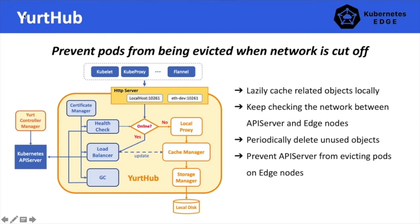The first problem we try to solve is how can we prevent pods from being evicted when the network connection between an edge node and an API server has been cut off. In the edge computing environment, the network connection between edge nodes and the API server can be unstable. However, Kubernetes requires the API server to be tightly connected to worker nodes. If a worker node is disconnected from the API server, or the API server misses several heartbeats from the worker node due to poor network connection, the node will be marked as unready, and the pods running on the node will be erased from etcd. When the worker node reconnects to the API server, Kubernetes will notice that pods running on it are not in etcd and will physically evict the pods.